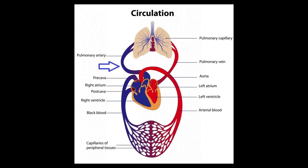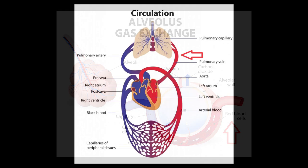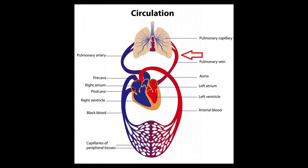Oxygen-deprived blood leaves the right side of the heart and travels to the lungs. When you breathe, room air — which contains around 21% oxygen — enters the lungs and travels down the bronchial tubes to the alveoli sacs. At the alveoli sacs, the oxygen molecules are absorbed by the blood in the capillaries while the carbon dioxide molecules are expelled from the blood. The oxygen-refreshed blood then leaves the lungs and travels back to the left side of the heart, where it's pumped by the left ventricle to all the various parts of the body.